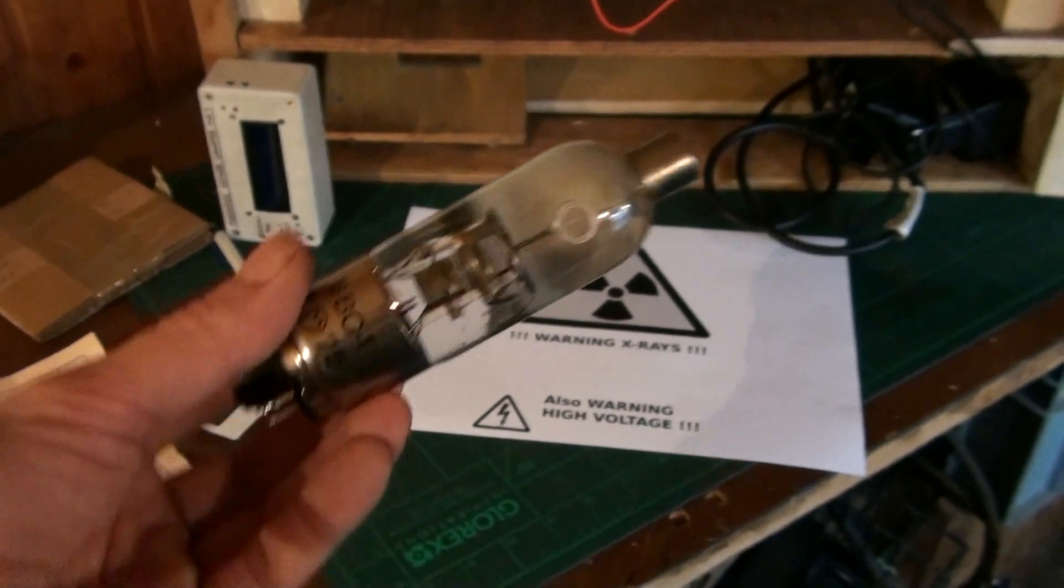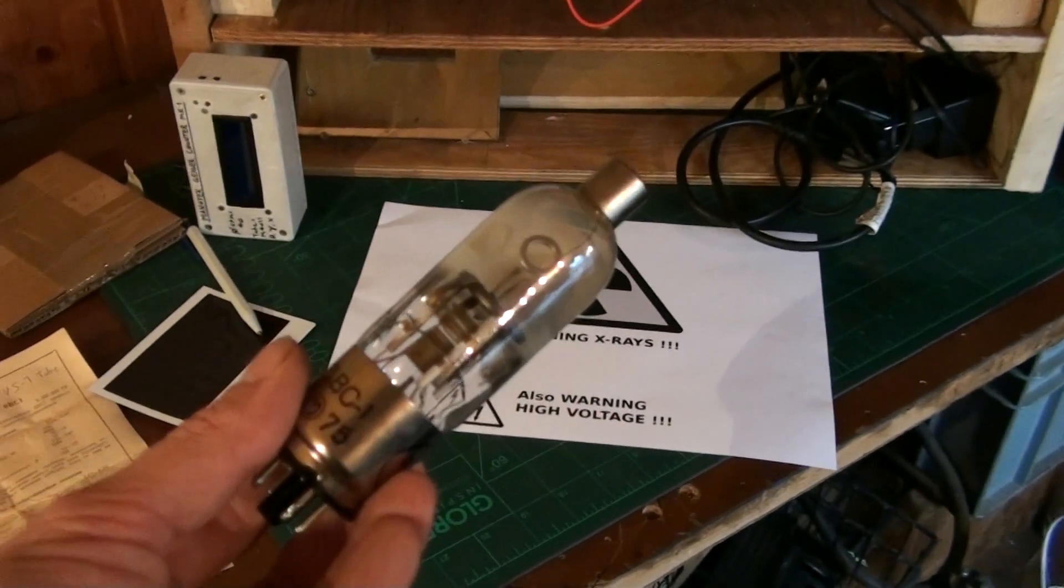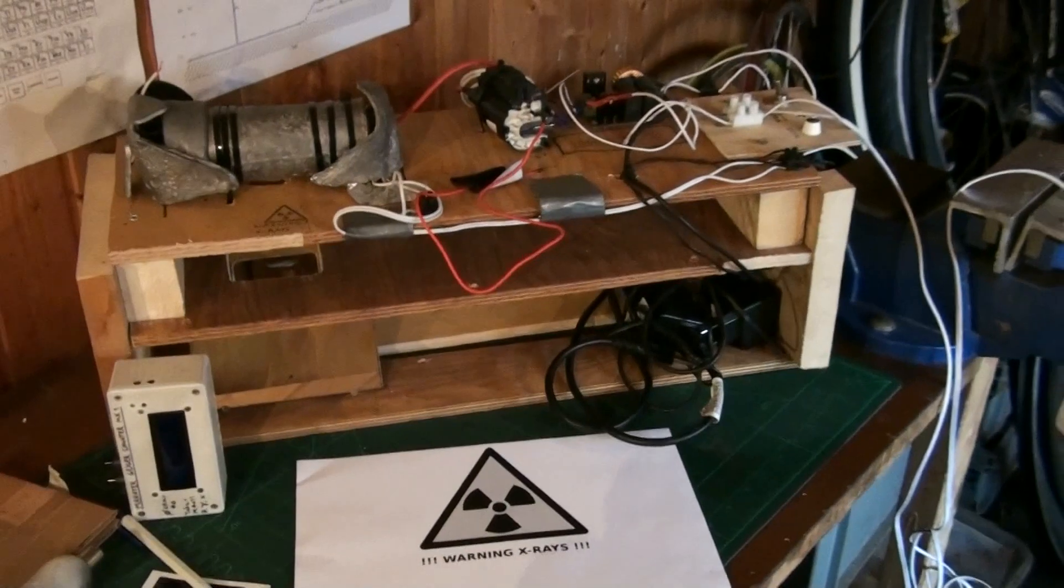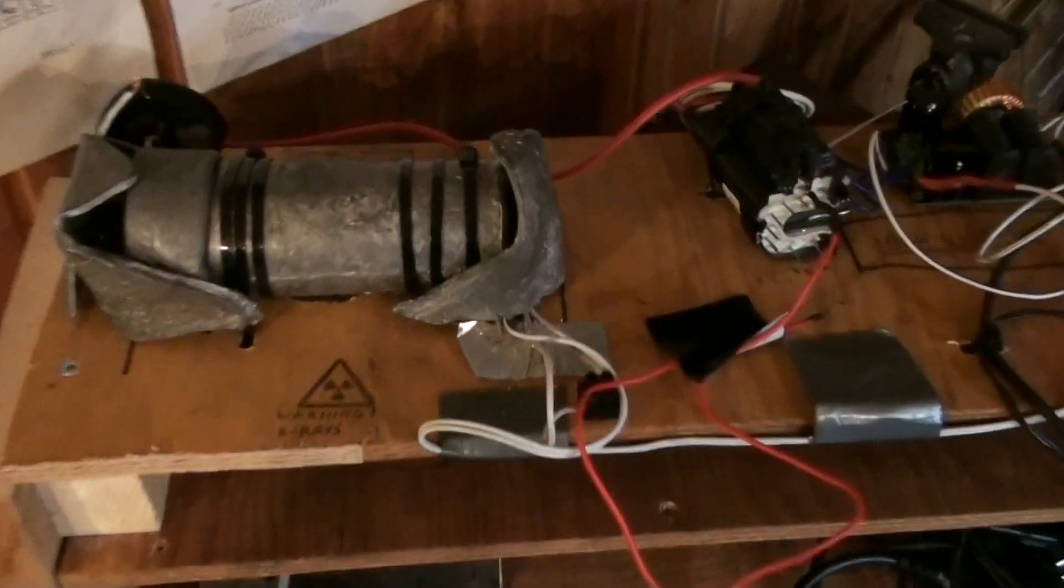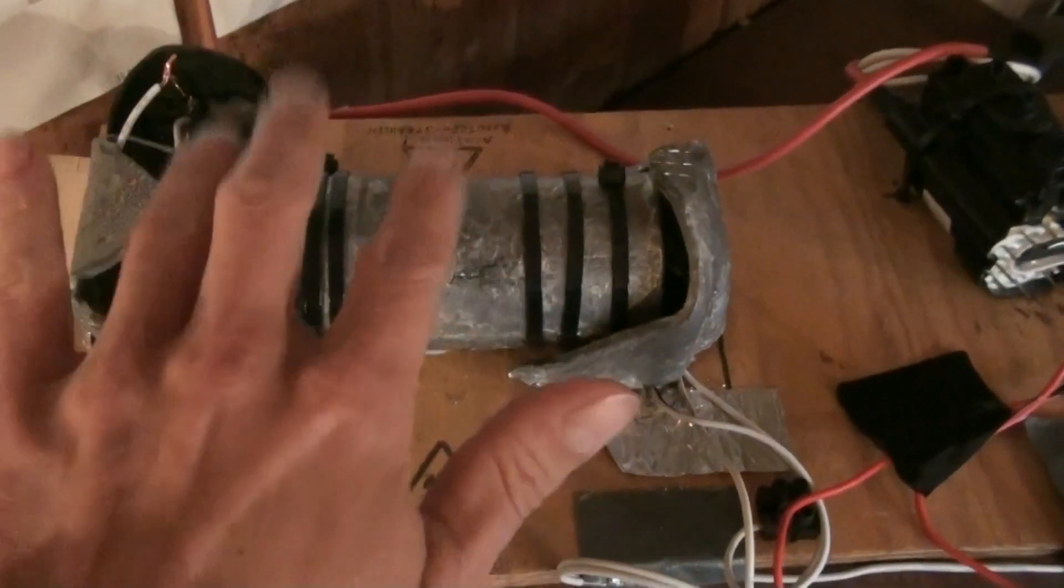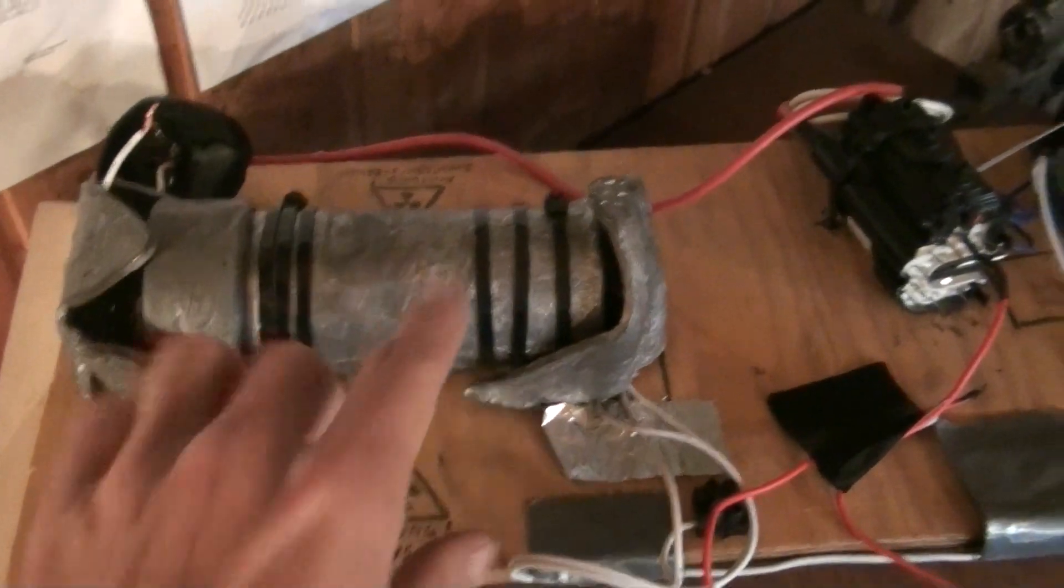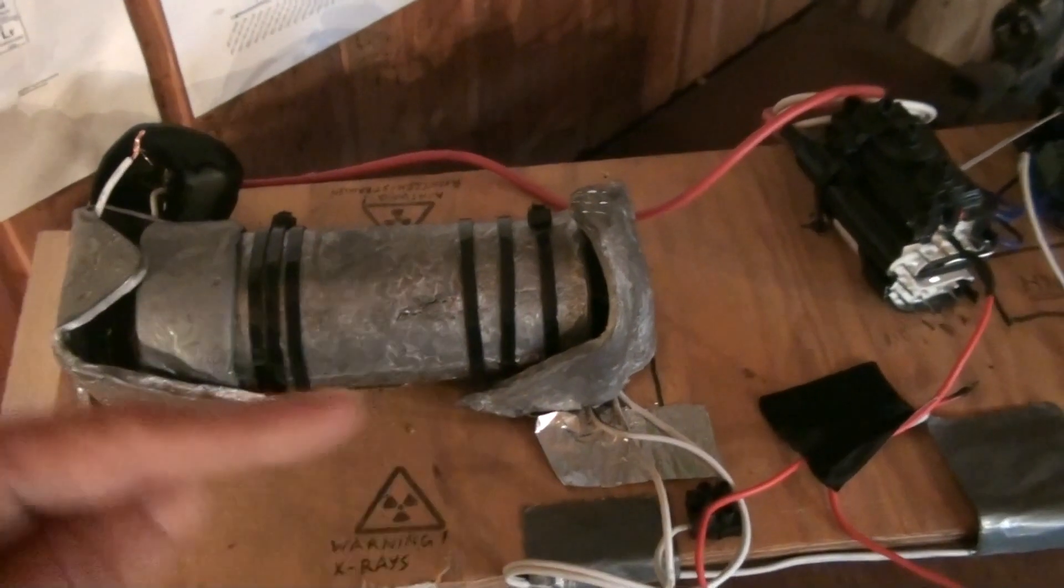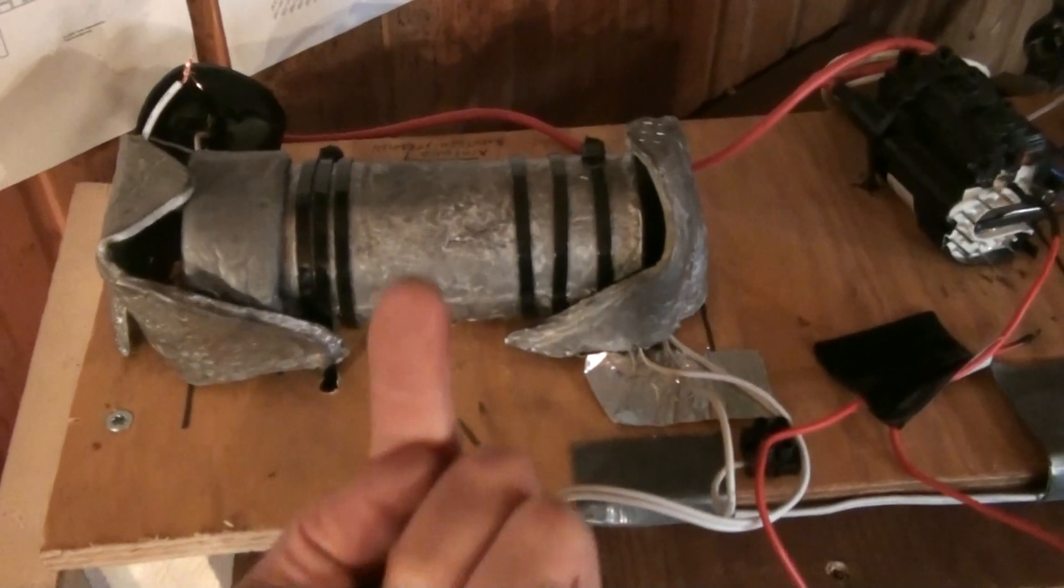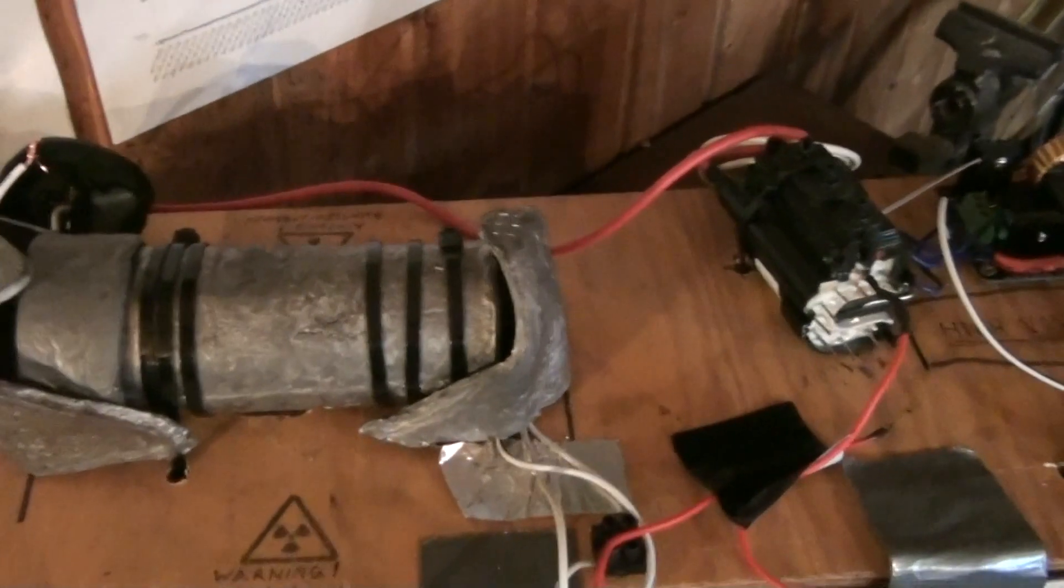How this thing works is basically: this is my lead protection housing. This thing is almost one kilo, or I think it's even more than one kilogram of lead that I melted and bent. It wraps around the whole tube, has a hole underneath like a window for the x-rays, and of course there is one of these vacuum tubes inside.